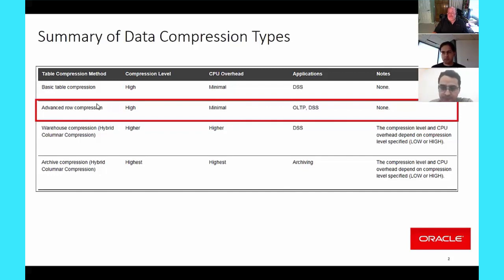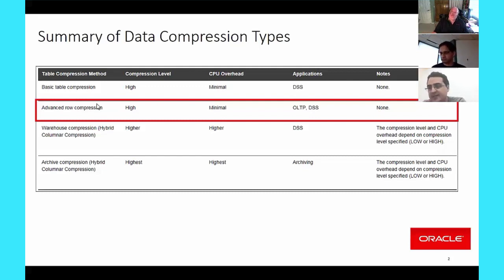One thing we've seen customers do is defer compression when they know a table will be very active—for example, a partitioned table with lots of inserts and updates for about a month. Some customers defer compression until that activity cools down. I would say it's not only about the table being active, but the number of transactions touching a small amount of data. If there are hundreds or thousands of transactions touching almost the same data, there may be a benefit to not using compression—but that must be analyzed per case.